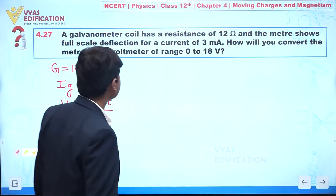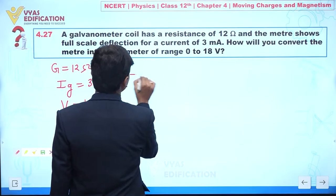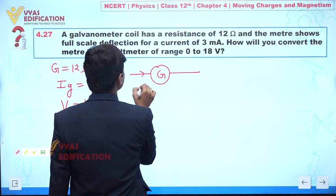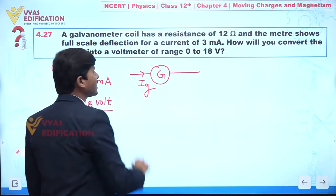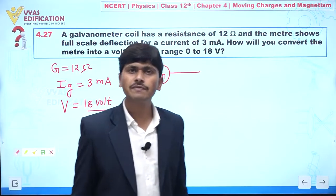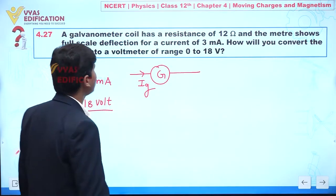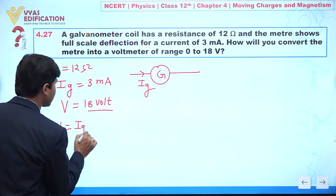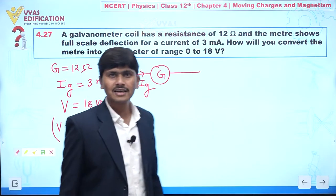Let us try to understand the mechanism. Suppose here we have a galvanometer and we can see the current giving full scale deflection is Ig. At this time, the potential difference across this galvanometer is V equal to Ig multiplied by capital G.